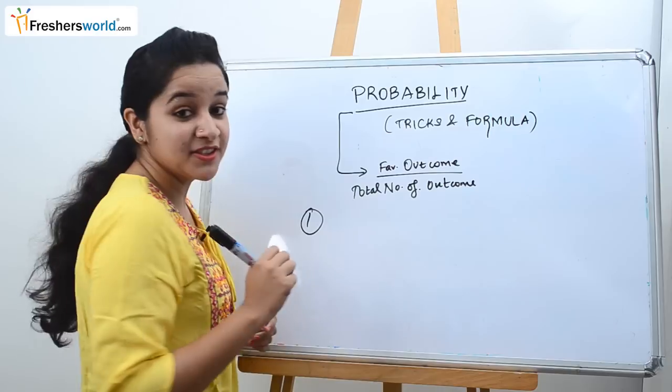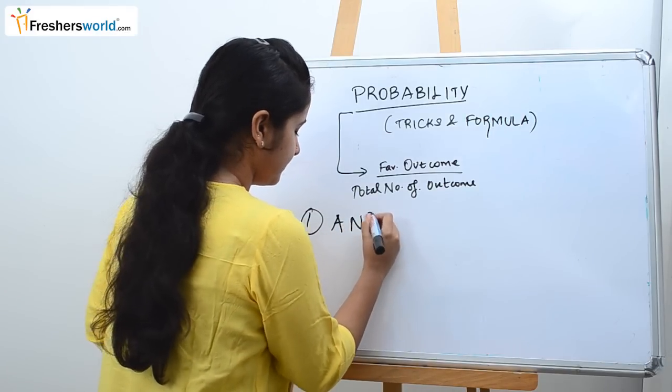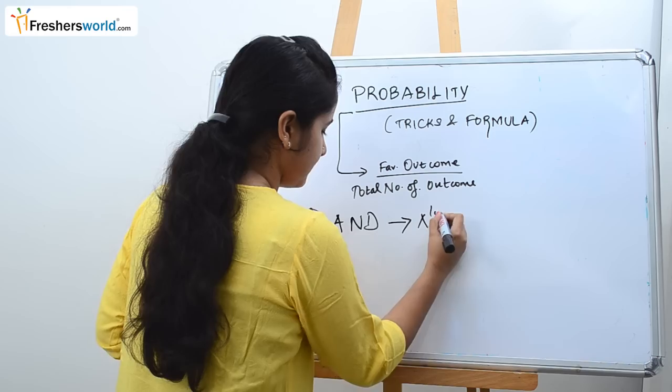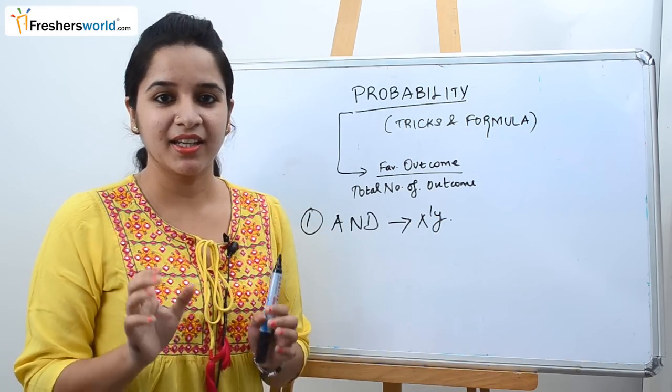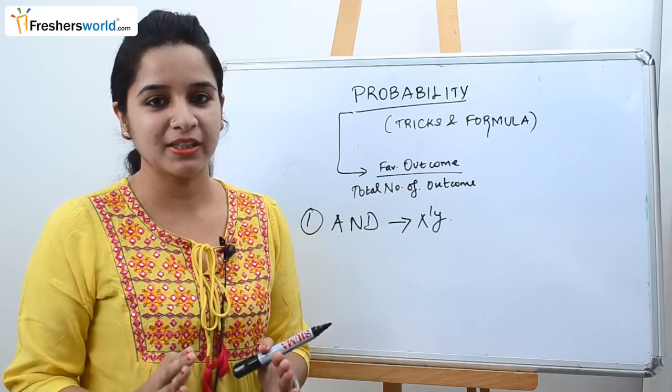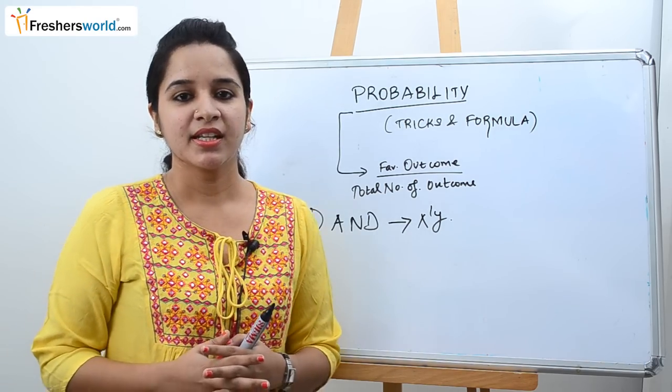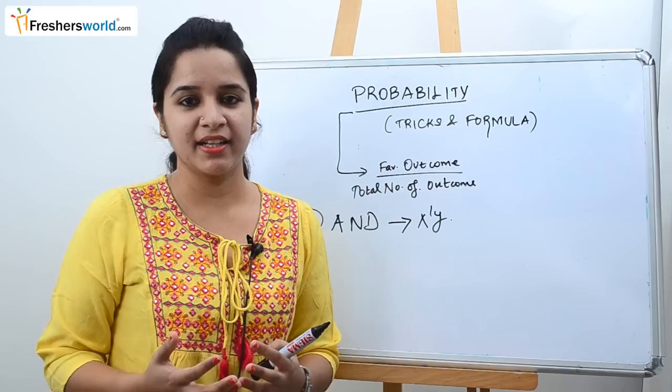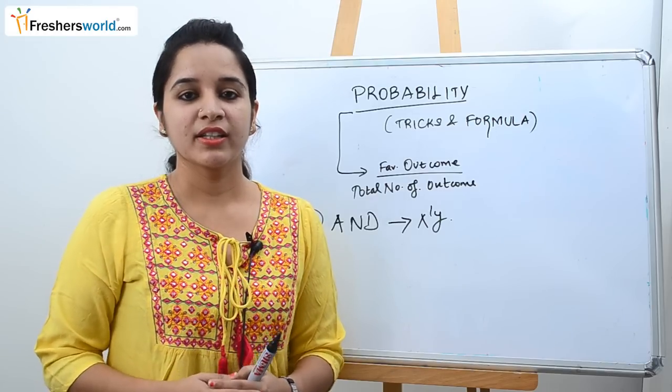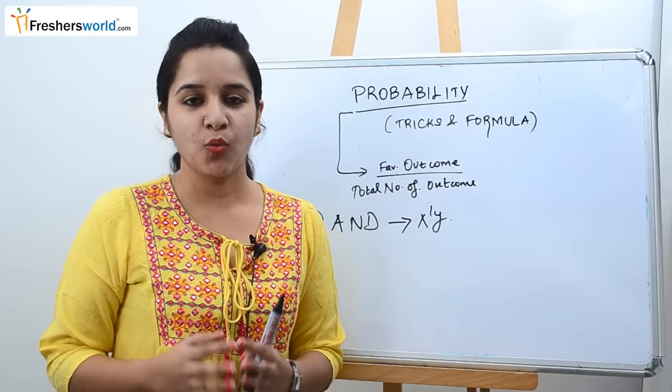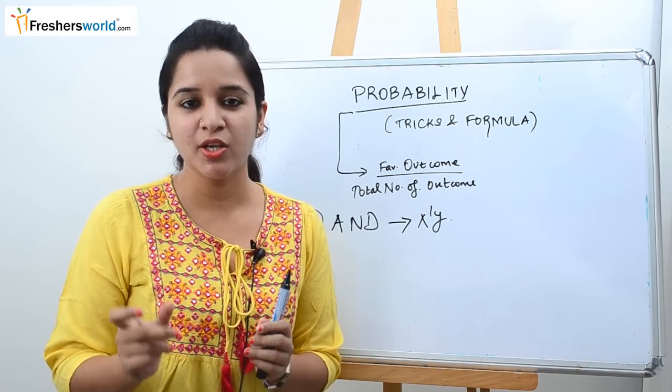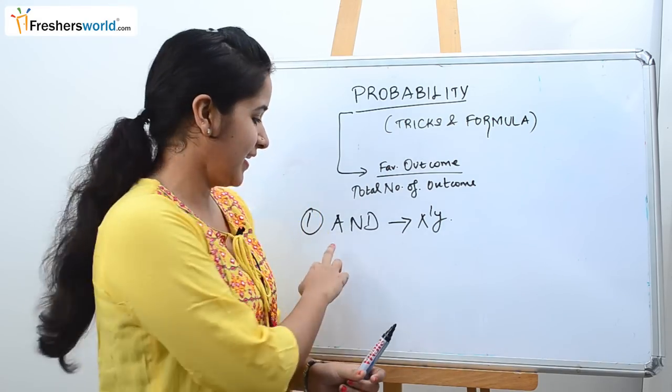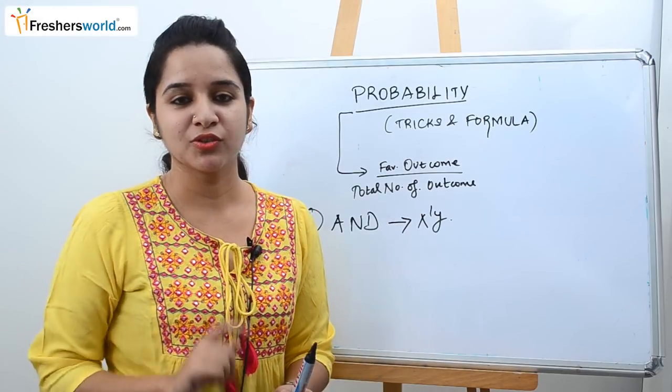The first trick is, if you see the word 'and' in a question it means you have to multiply it. For example, three kings and one queen or three red balls and one blue ball. So if you find a question where they ask the probability of this combination with 'and' then you have to multiply.